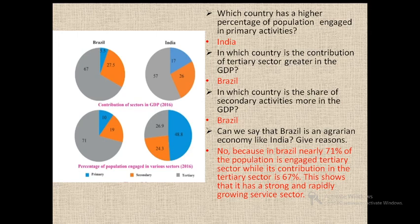Here you can see the pie charts. The left ones denote Brazil and the right ones denote India. The first two denote the contribution of sectors in GDP and the other two denote the percentage of population engaged in various sectors. Blue color denotes primary activities, orange color denotes secondary activities and gray color denotes tertiary activities.